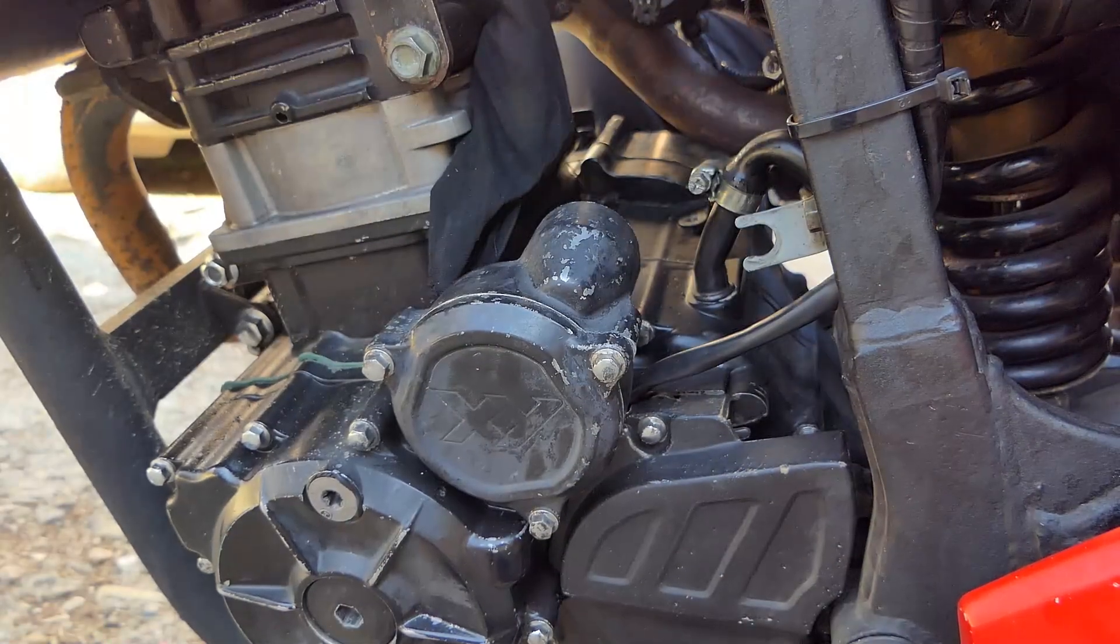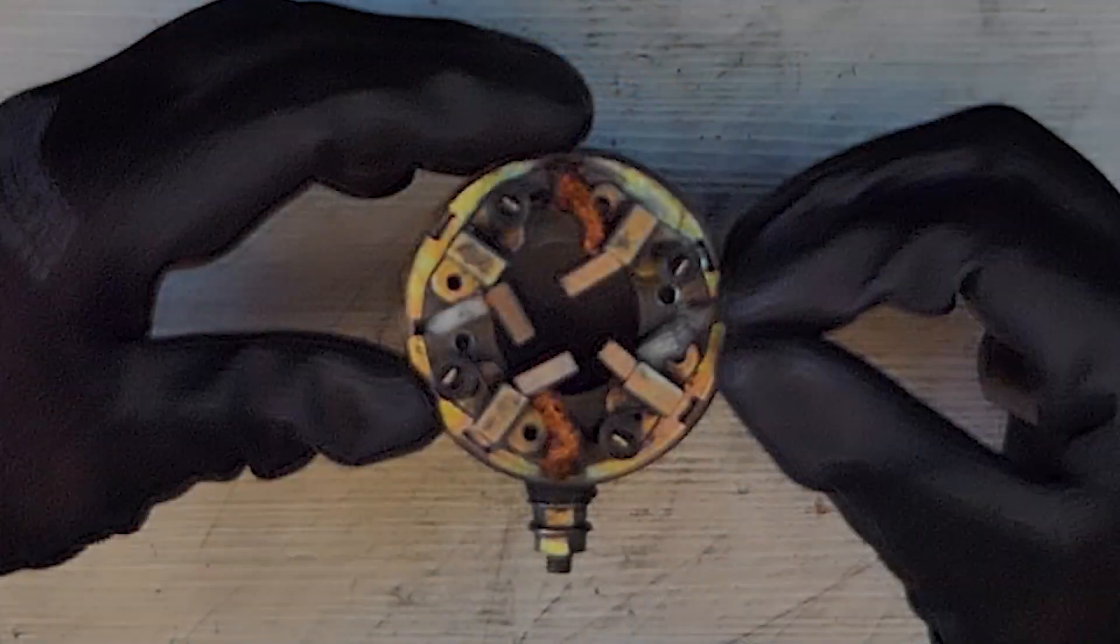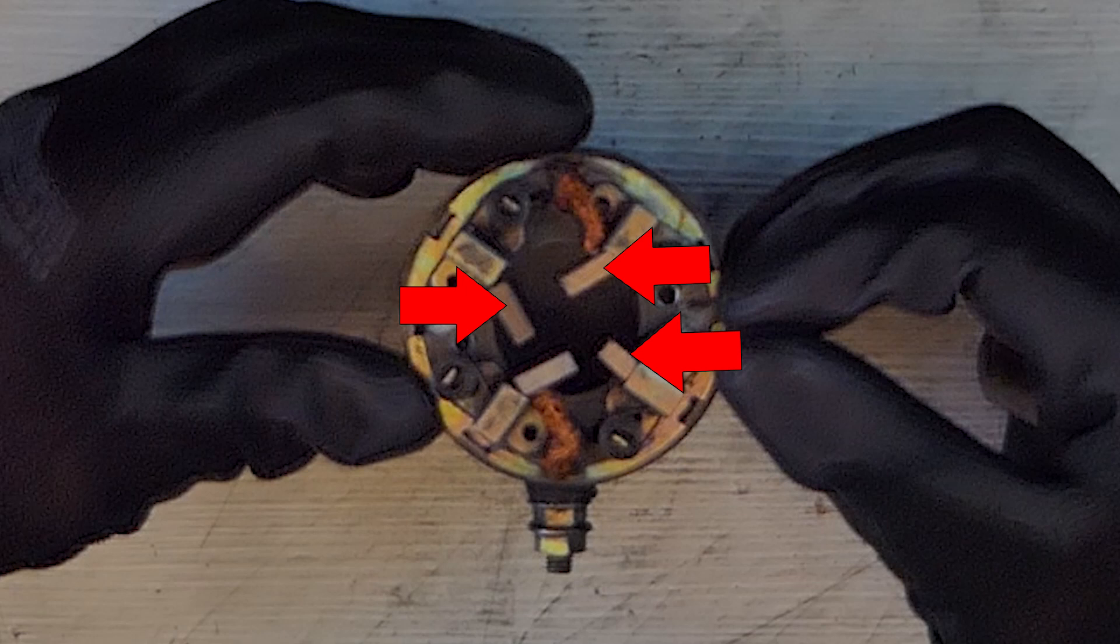This is the simplest type. The most common issue with this kind of starter motor is worn-out brushes, which need to be replaced when that happens. In this case, the brushes were recently replaced, so we'll only open the starter motor and clean the contacts.